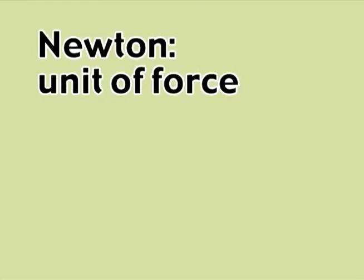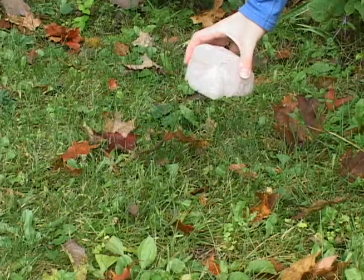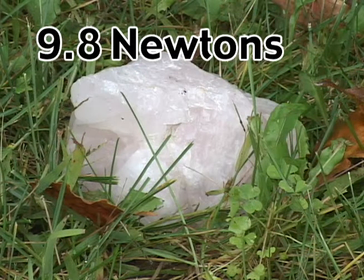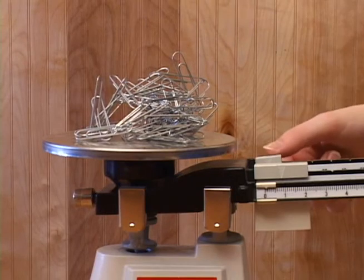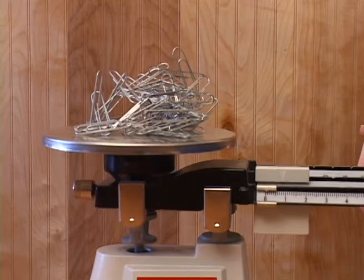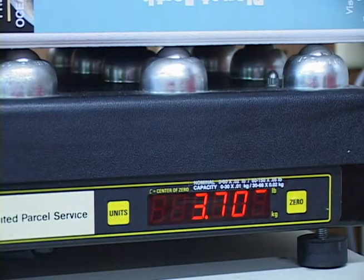The metric unit of weight is the newton, which is a unit of force. Weight is the amount of force Earth's gravity exerts on an object. An object that has a mass of 1 kilogram is pulled to Earth with a force of 9.8 newtons, so a 1 kilogram mass on Earth weighs 9.8 newtons. While scientists sometimes use newtons to describe weight, we typically describe the weight of objects in metric units of mass — grams, milligrams, or kilograms — or in English units of ounces or pounds.